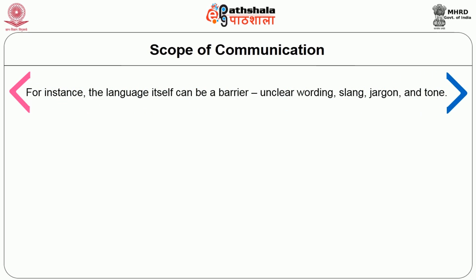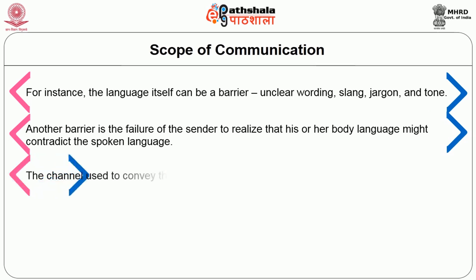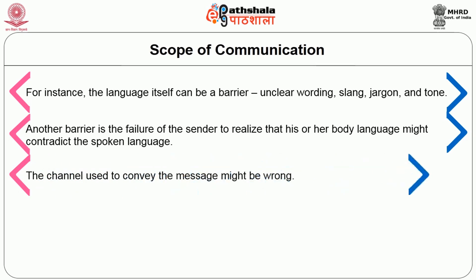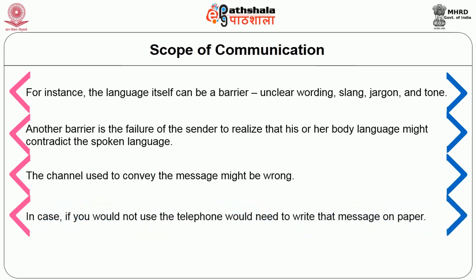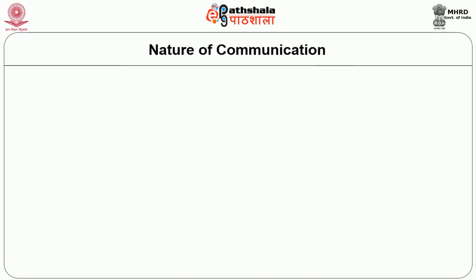So many things can go wrong during the communication process that we should always assume something will go wrong and take steps to prevent it. Barriers to good communication are always present. For instance, language itself can be a barrier — unclear wording, slang, jargon, and tone. Another barrier is the failure of the sender to realize that body language might contradict spoken language, or using the wrong channel to convey the message. Poor listening skills also contribute as a barrier.